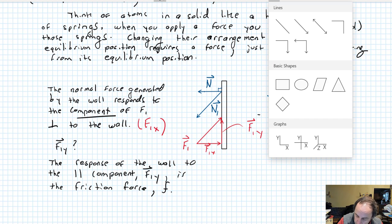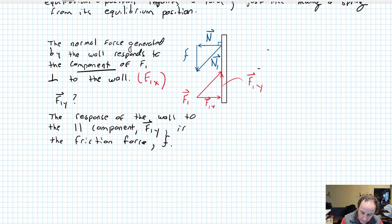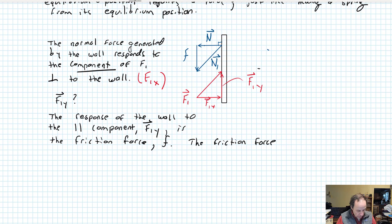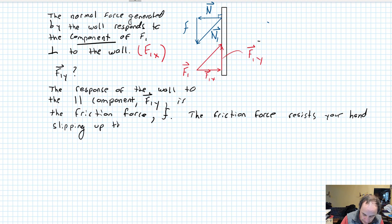This y-component — the friction force — resists your hand slipping up the wall. If the coefficient of friction is high enough, it'll prevent your hand from slipping up the wall. If it's not high enough, then your hand will just slip up more slowly than it would if there were no friction.